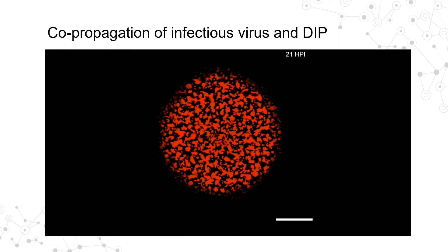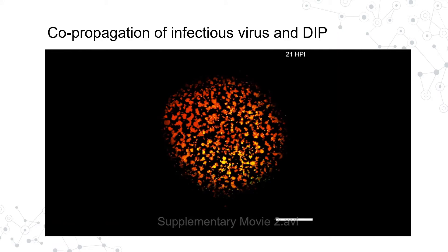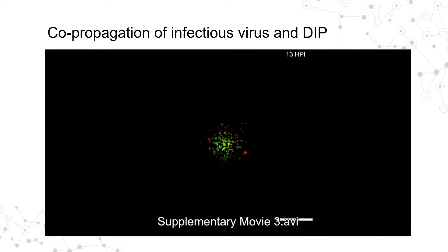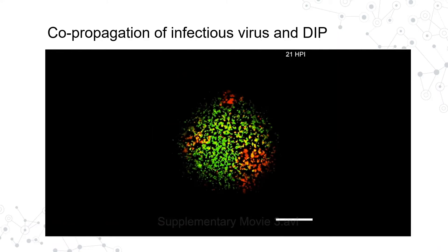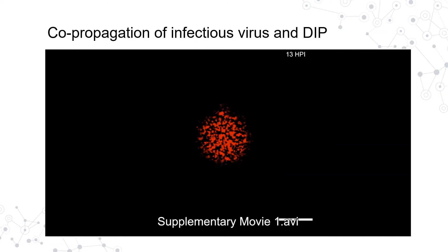Images taken by that microscope can be converted to movies. This one shows an infection by an engineered vesicular stomatitis virus that expresses red fluorescent protein — each red dot was an infected cell. We also co-infected cells with artificial defective interfering particles, or DIP, that expresses green fluorescent protein. By changing the ratio of DIP versus common virus, we saw different spreading patterns, and cells with signals from both virus and DIP appeared yellow.